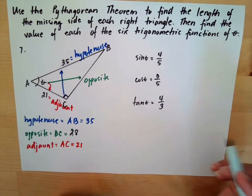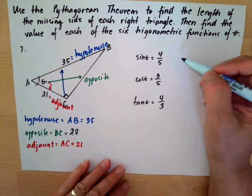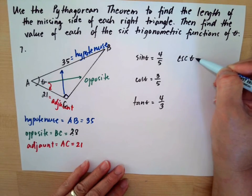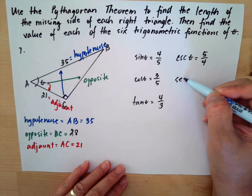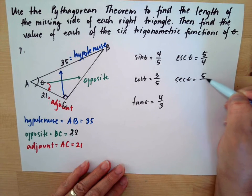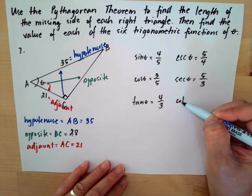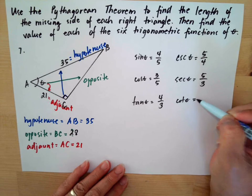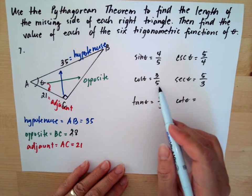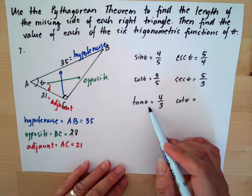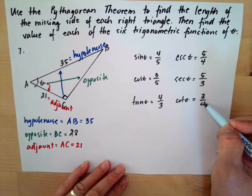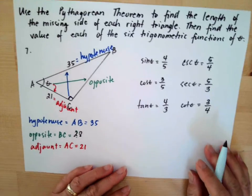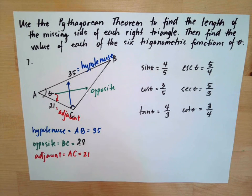The reciprocal functions are found by flipping the ratios. Cosecant theta equals 5/4, secant theta equals 5/3, and cotangent theta — the reciprocal of tangent — equals 3/4. This completes our answer for this problem.